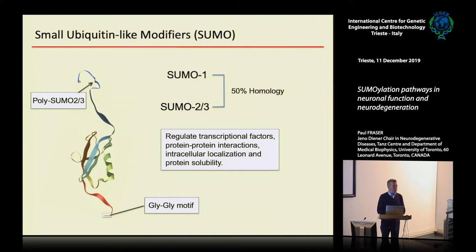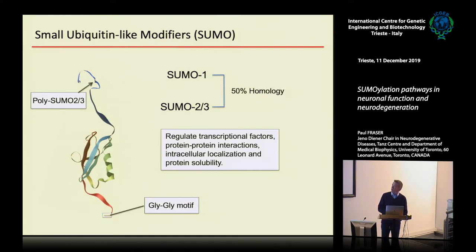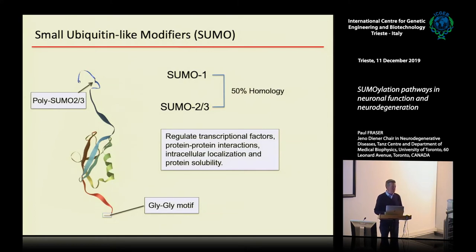Unlike ubiquitin, which is the famous counterpart of simulation, there hasn't been that much done until recently on SUMO modifications. It's very similar to ubiquitin, but actually less complex. There are three different SUMO isoforms: 1, 2, and 3.